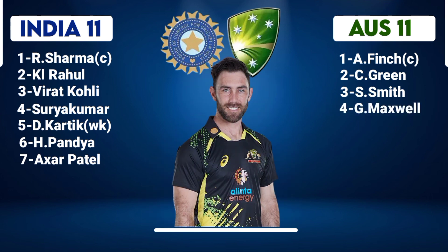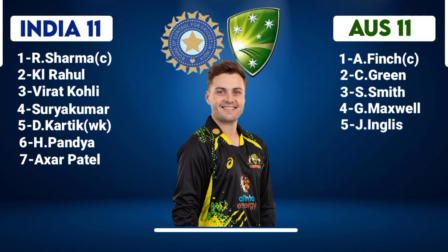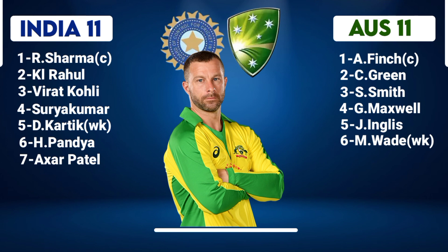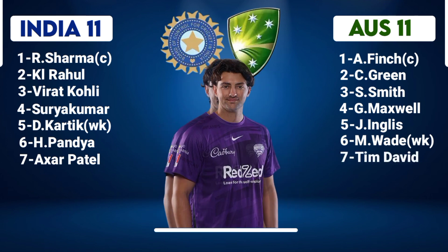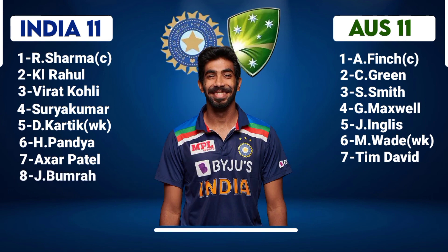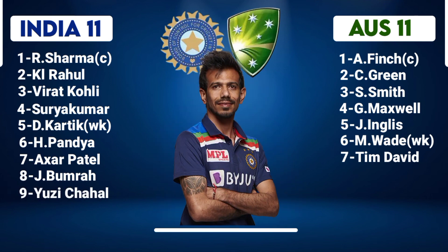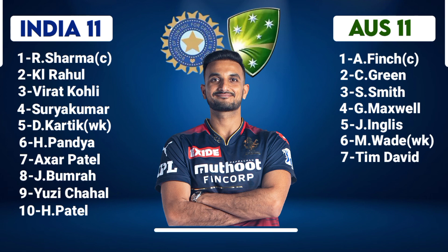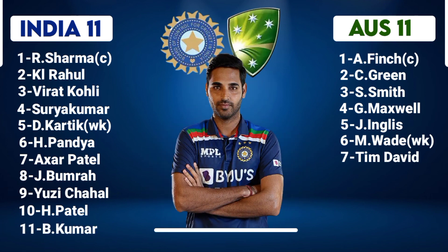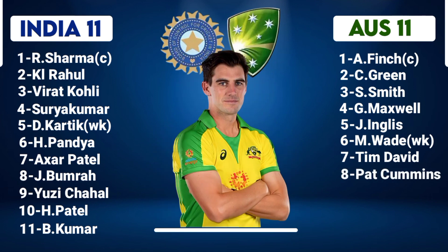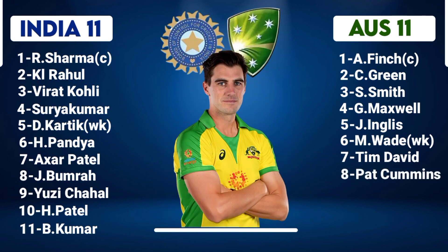Australia Middle Order continued: No.5 Josh Inglis, Right-Hand Batsman. No.6 Matthew Wade, Wicketkeeper and Left-Hand Batsman. No.7 Tim David, Right-Hand Batsman. India Team Bowlers: No.8 Jasprit Bumrah, Right-Arm Fast Bowler. No.9 Yuzvendra Chahal, Right-Arm Leg Spinner. No.10 Harshal Patel, Right-Arm Fast Bowler. No.11 Bhuvneshwar Kumar, Right-Arm Fast Bowler.